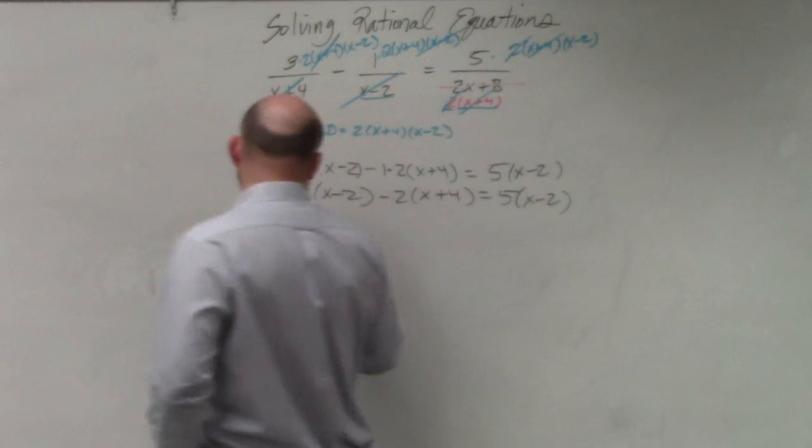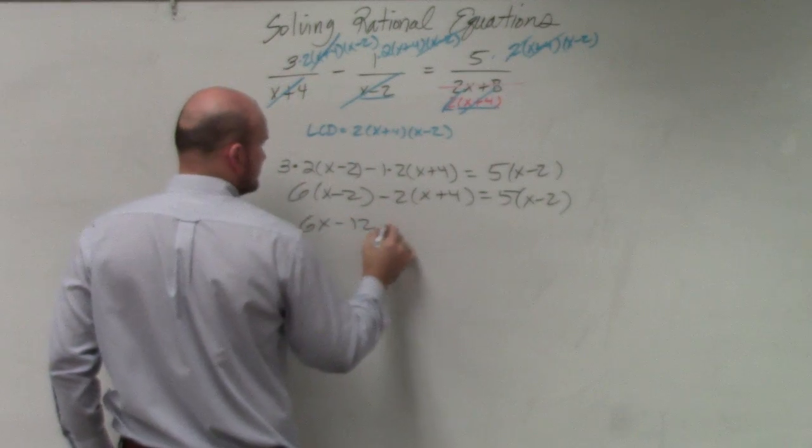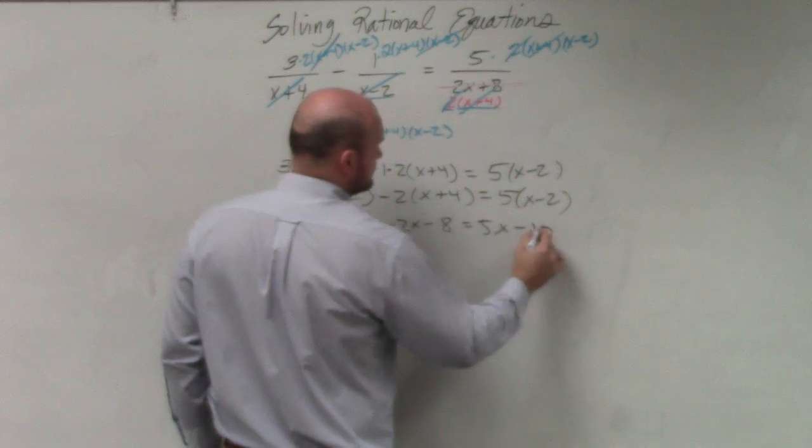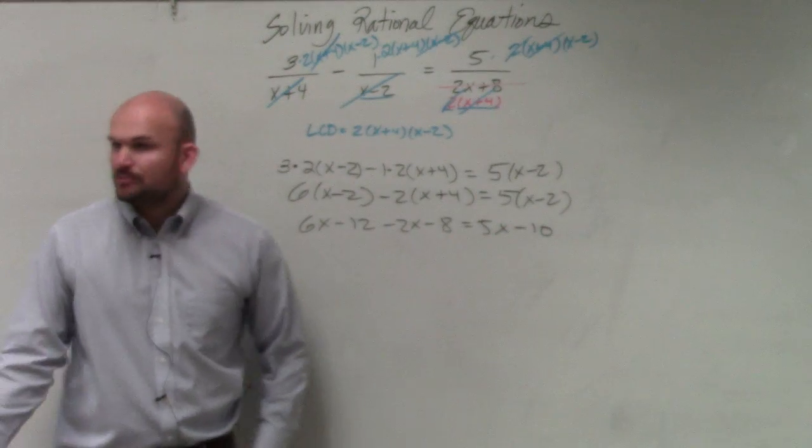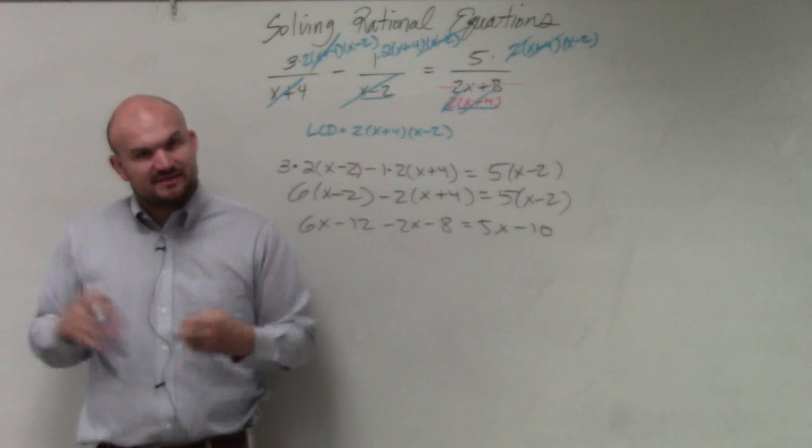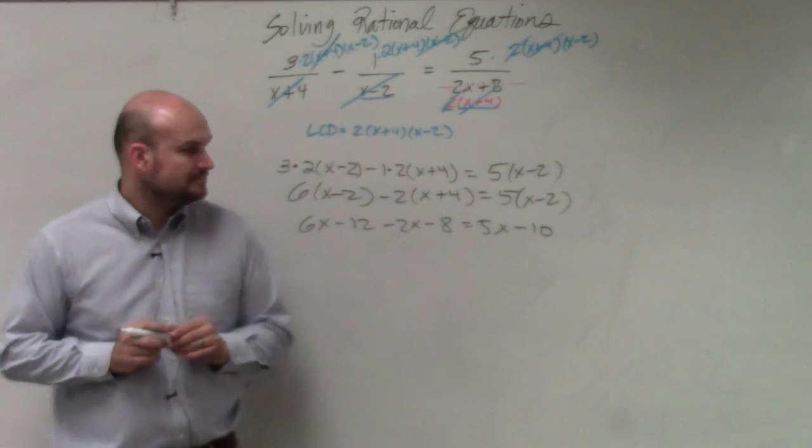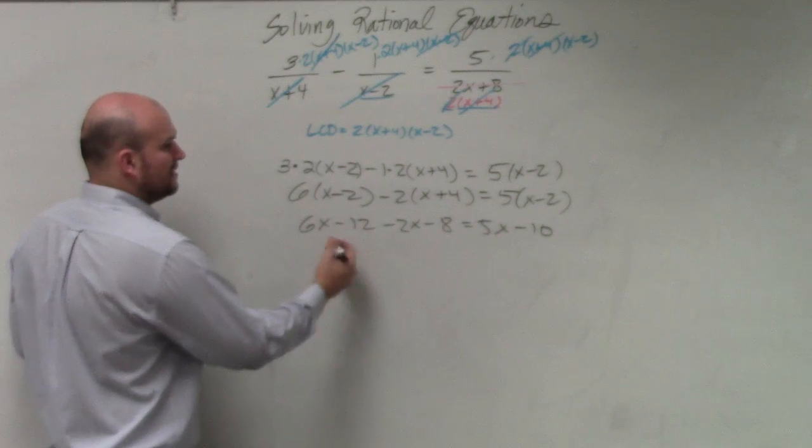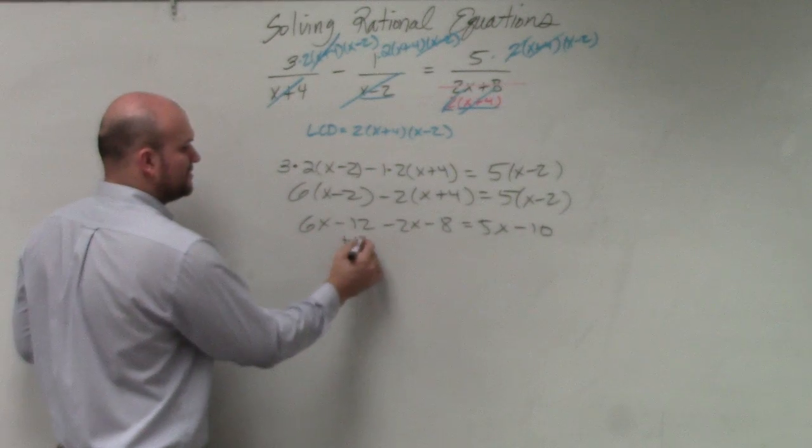So now, I can apply the distributive property. And then, to do a problem like this, you just combine all your terms on the same side. Right? So let's just get all the x's to the left-hand side, and then all the other numbers to the right.